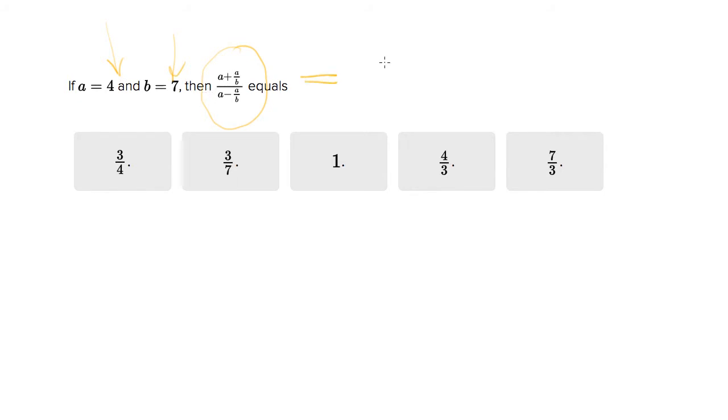So this will become 4 plus 4 over 7 divided by 4 minus 4 over 7.